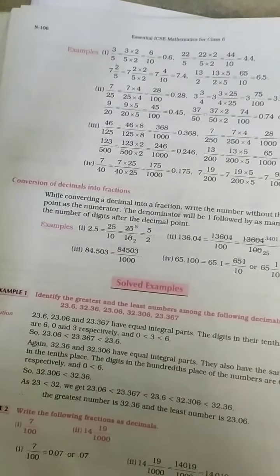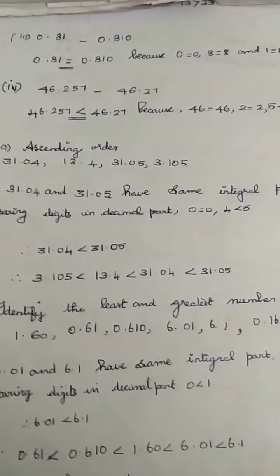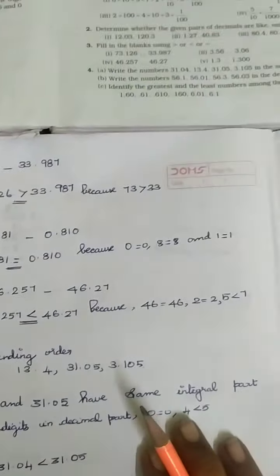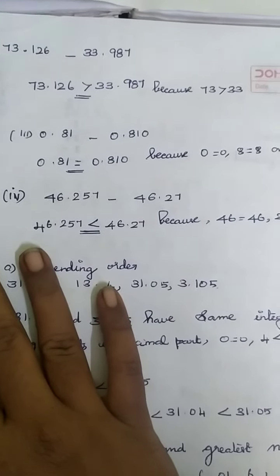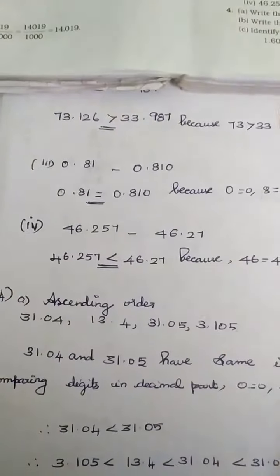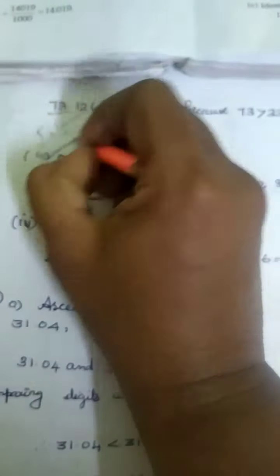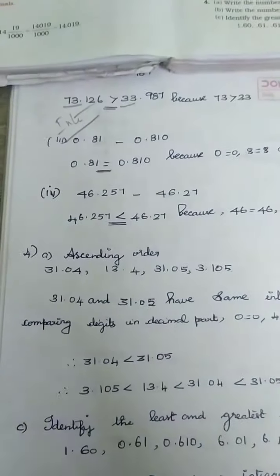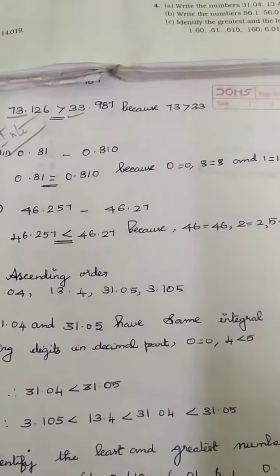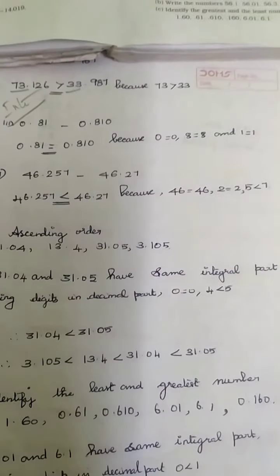Problem number 3 — fill in the blanks with greater than, less than, or equal to symbol. First subdivision: 73.126 and 33.987. We compare the integral part first: 73 and 33. 73 is the bigger number. So 73.126 is greater than 33.987. Since the comparison is decided in the integral part itself, you are not going to compare the decimal part — directly say 73.126 is greater.